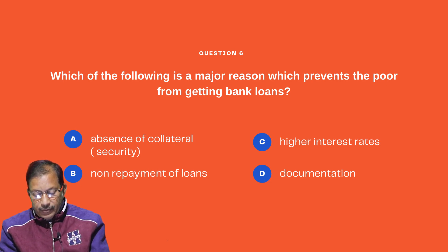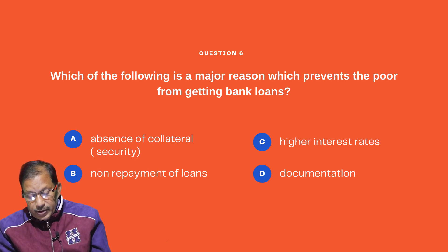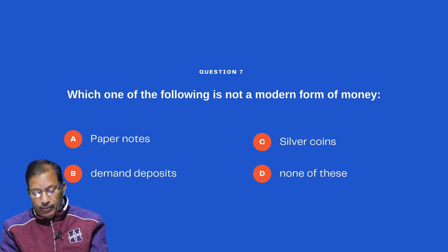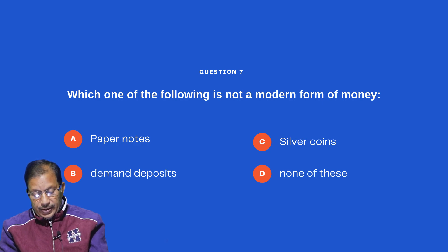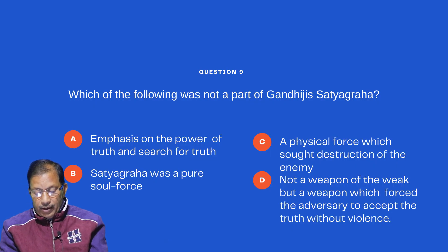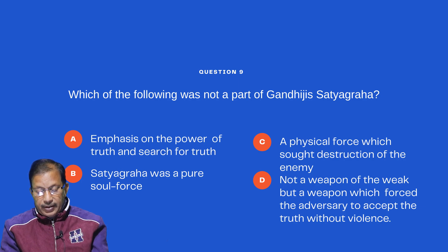Question 6: Which of the following is a major reason that prevents the poor from getting bank loans — absence of collateral security, non-repayment of loans, higher interest rate, or documentation? Question 7: Which of the following is not a modern form of money — paper notes, demand deposits, silver coins, or none of these? Question 8: When was Italy unified — 1860, 1865, 1870, or 1875? Question 9: Which of the following was not a part of Gandhi's Satyagraha — emphasis on truth, satyagraha as a moral force, physical force seeking destruction of the enemy, or a weapon forcing the adversary to accept truth without violence?